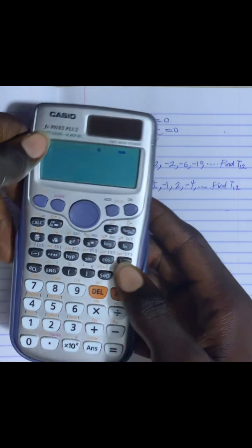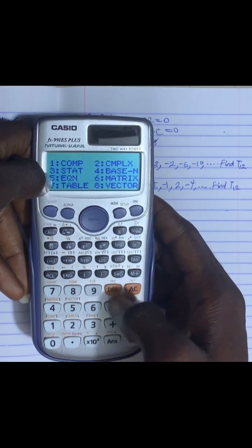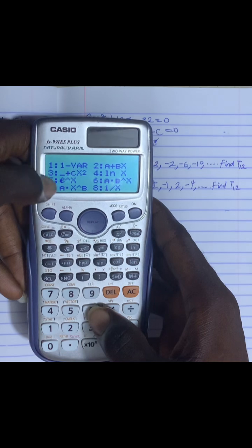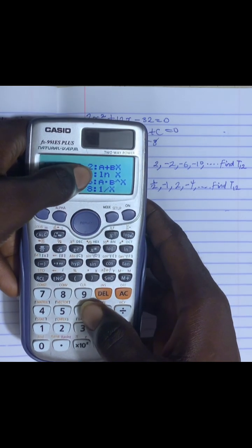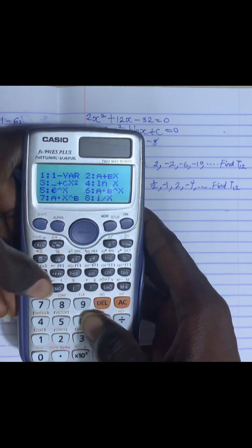Now, all we have to do to set our calculator on AP is press mode. Number 3 is showing stats, we'll press 3. Number 2 that is showing A plus BX is actually AP. So we press number 2.